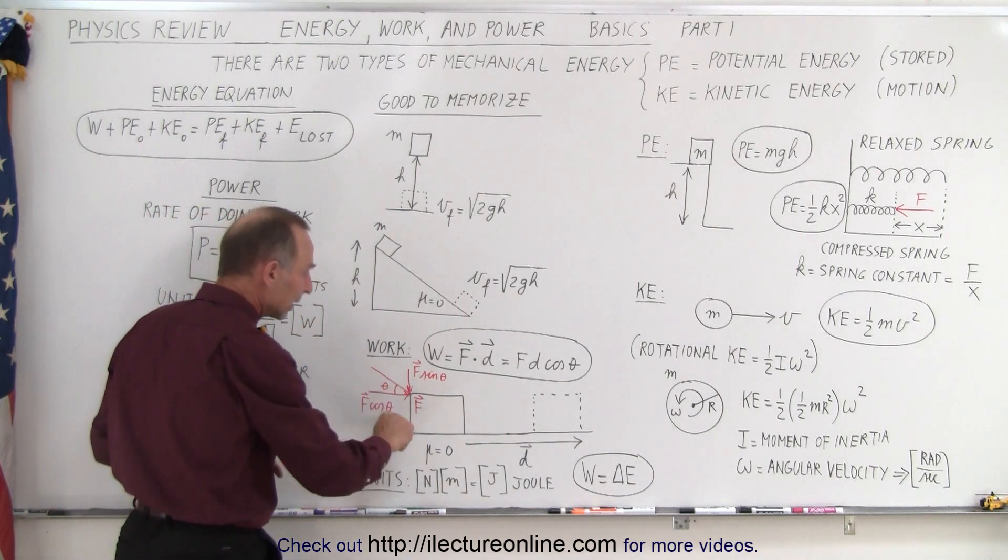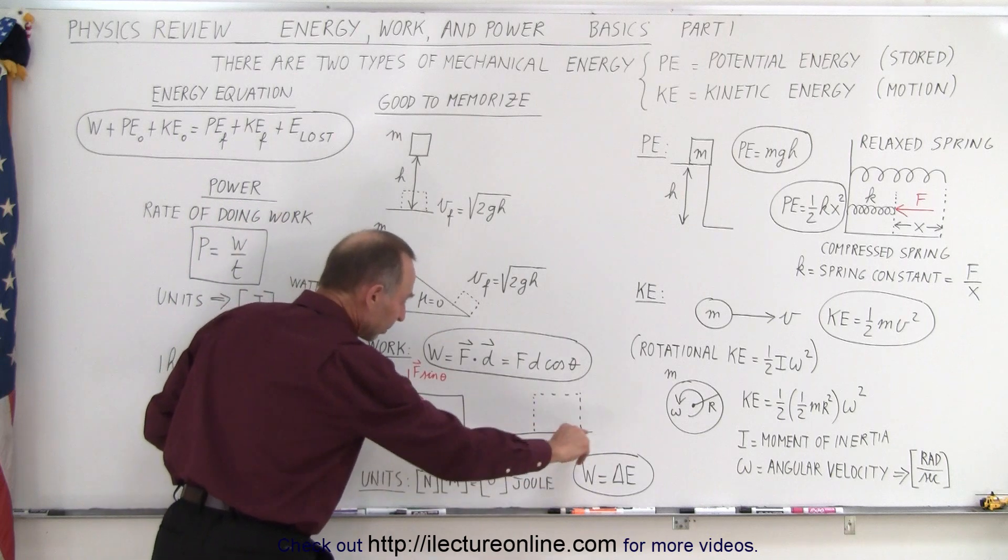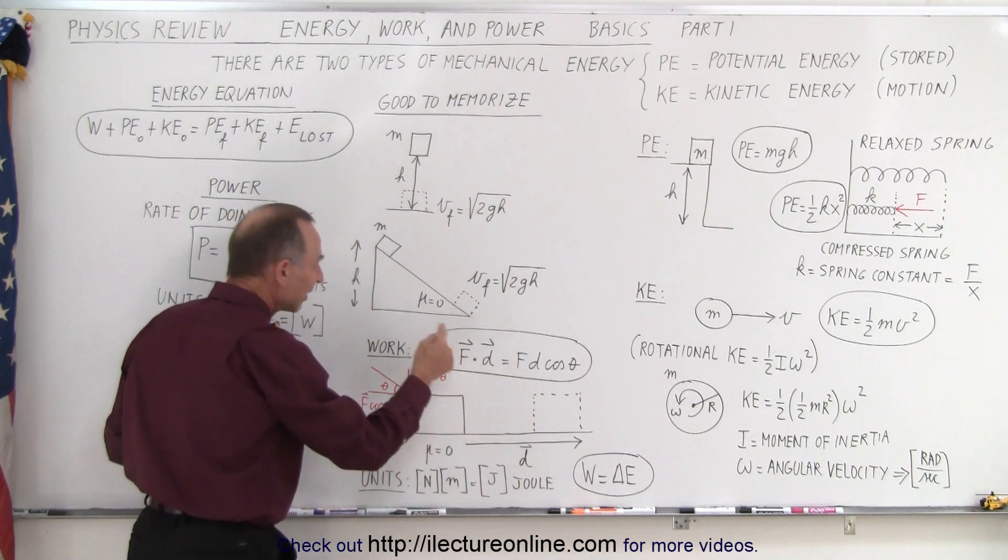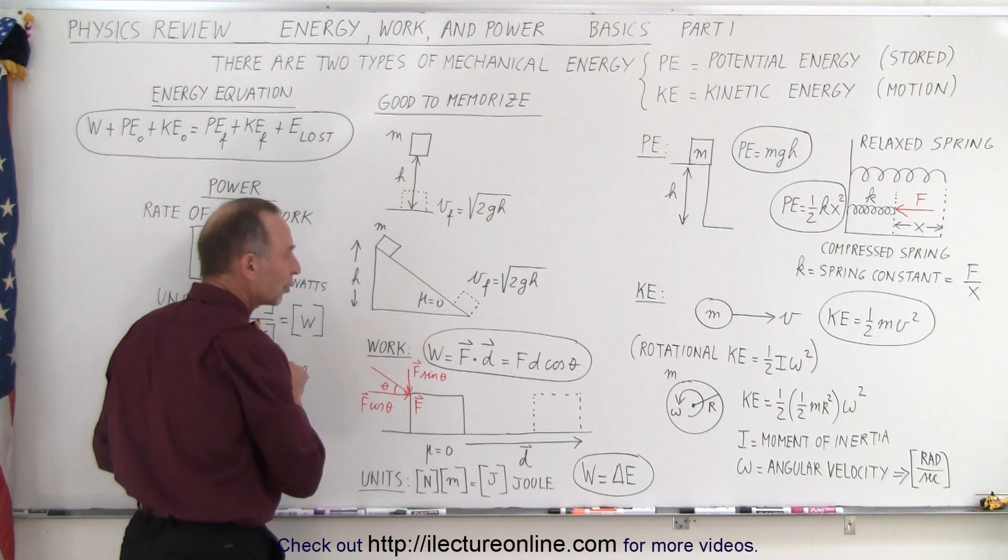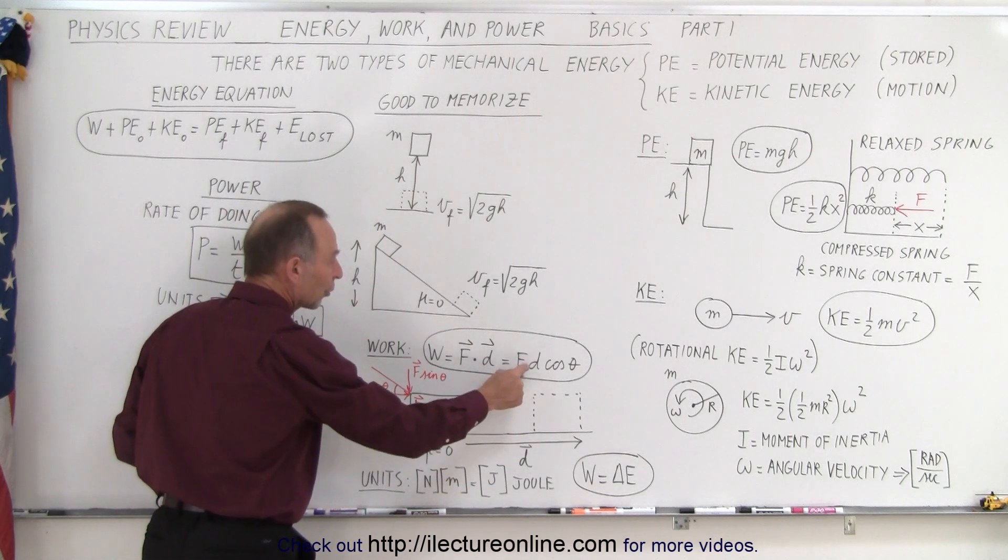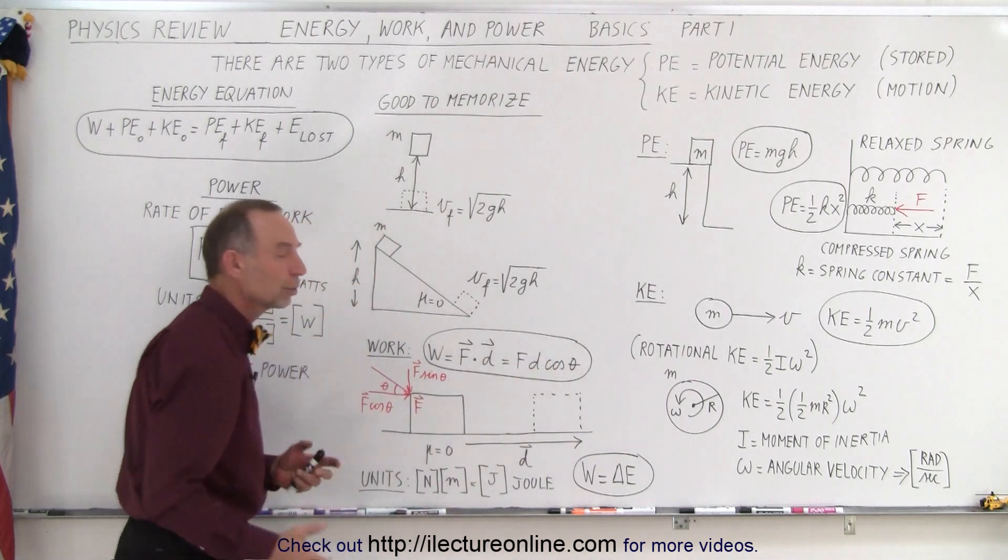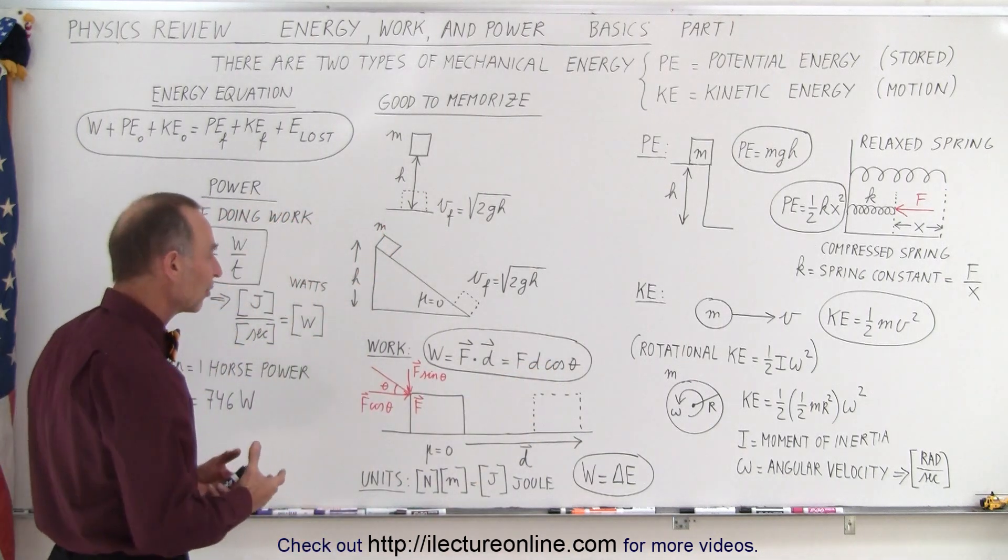if the force is not applied in the same direction as the displacement, we have to multiply the force times the displacement times the cosine of the angle between them. So it becomes the magnitude of the force times the magnitude of the displacement times the cosine of the angle between them. And that is defined as the work done.